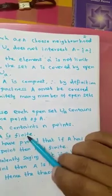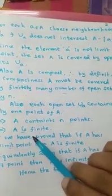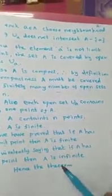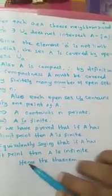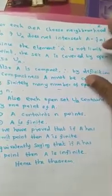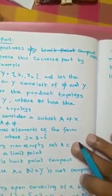This shows that A is finite. We have proved that if A has no limit point then A is finite. Equivalently, if A is infinite then A must have a limit point. Hence we prove the first part of the theorem. Now let us prove the second part by giving a counter example.